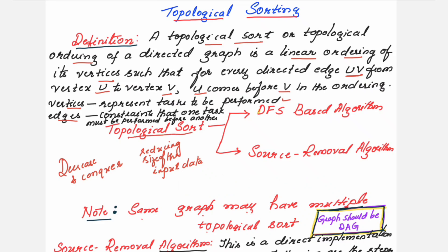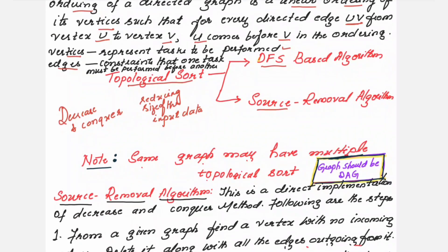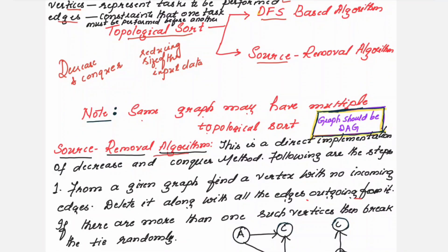Topological sorting can be carried out using two algorithms: one is the DFS algorithm and the other is the source removal algorithm. In this session I am giving you the example using the source removal algorithm, which is a direct implementation of the decrease and conquer method.